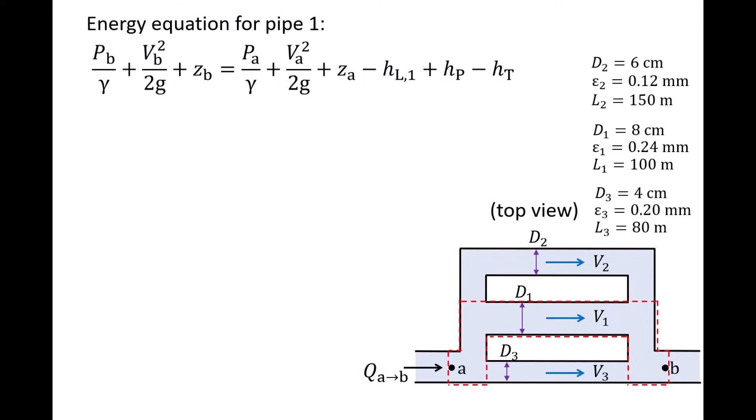Since we have steady flow and the pipe diameter at A and B are the same, the velocity at A and B are the same as well, and the velocity head terms cancel out. It was given that the inlet and outlet elevations are the same, so zA and zB cancel out as well. The pump head and turbine head are zero since no pumps or turbines exist in the control volume. Rearranging the terms that survive, we find that the head loss through pipe 1, HL1, is equal to the pressure difference, PA minus PB, divided by the specific weight of water, gamma.